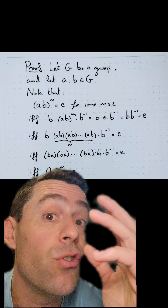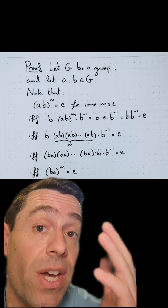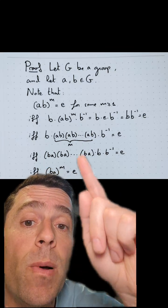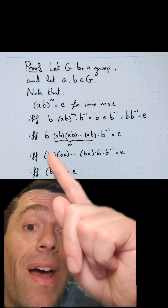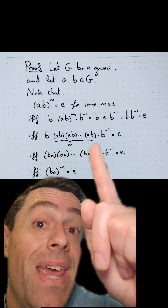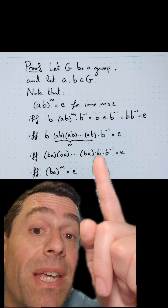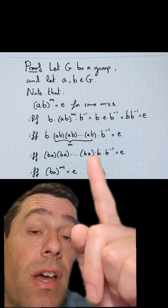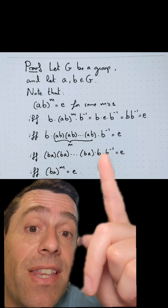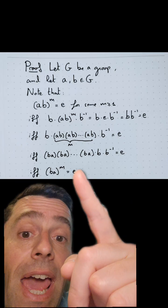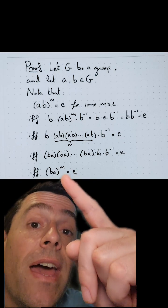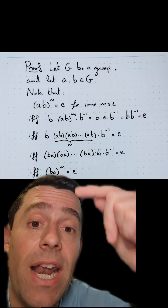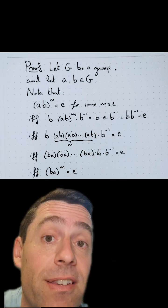And if I rearrange this using the associative property, which I have because I am working in a group, this is B times A, B times A, et cetera, M times, and then there is a B there left over times B times the B inverse. But B times B inverse is, again, the identity, and that is just B times A to the Mth power, and therefore what I get is B times A to the Mth power is the identity, and I've proved that equivalence.